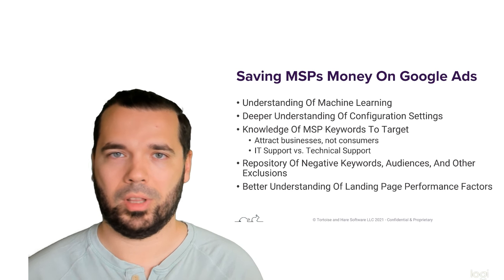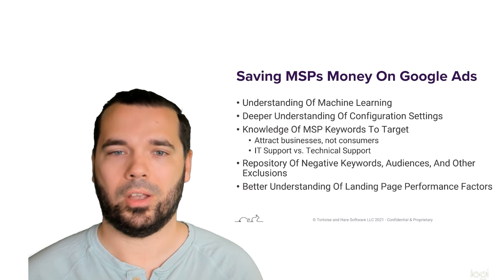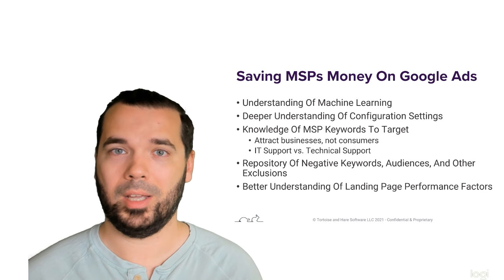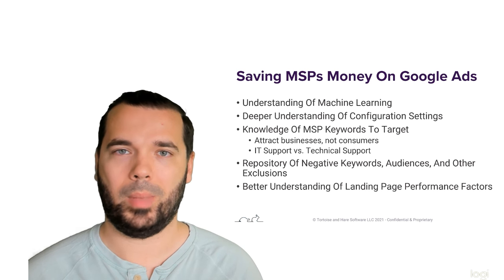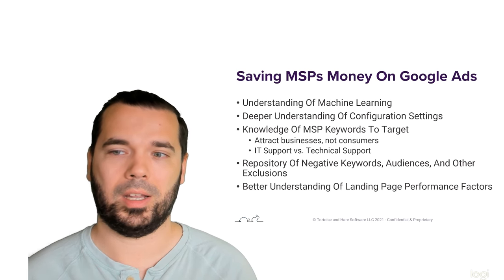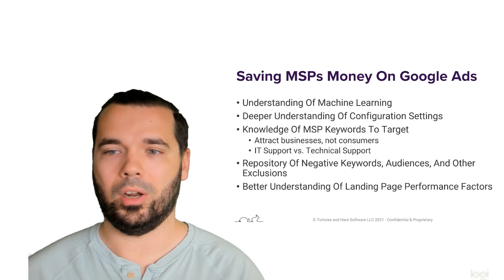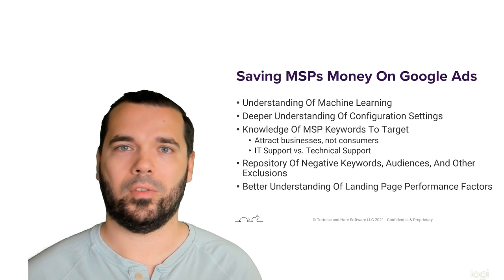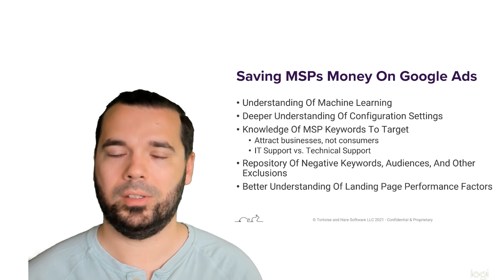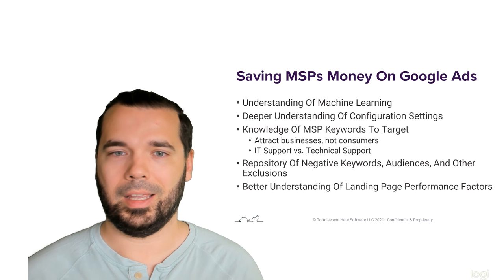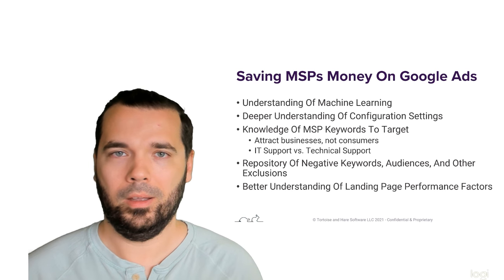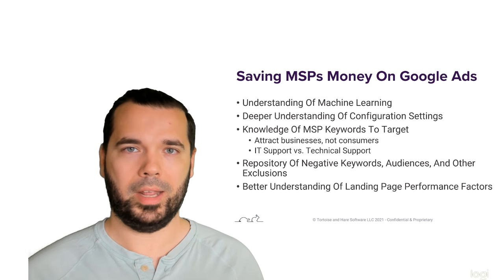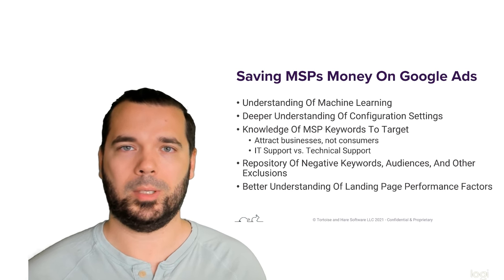These changes require adjustments to configuration settings, account structure, or strategy. If you're not keeping up with this regularly and reacting to optimize account performance based on changes — like new available audiences, new available match types on keywords — you're going to train your account to perform badly and it will continue to do so.